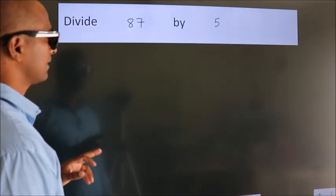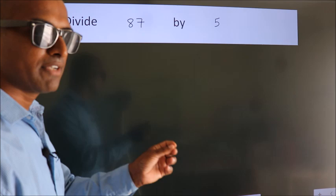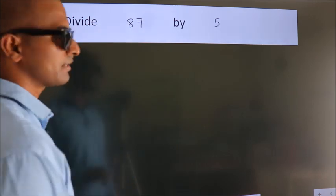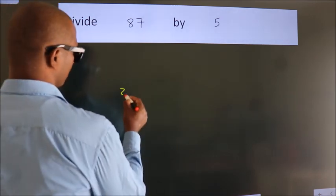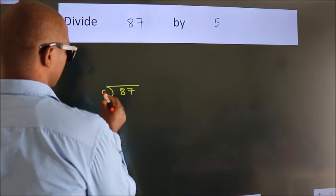Divide 87 by 5. To do this division, we should frame it in this way. 87 here, 5 here.